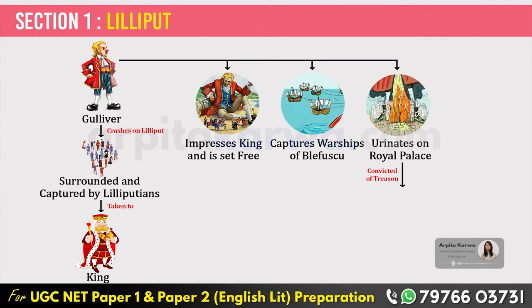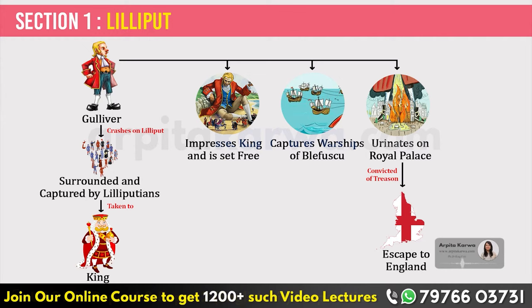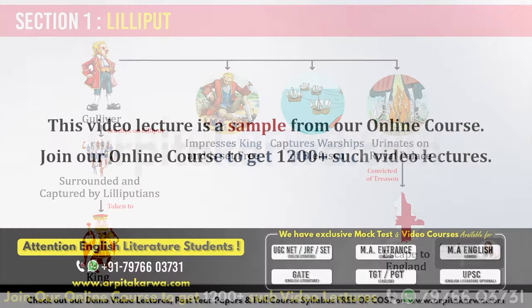Gulliver is accused of treason and sentenced to be shot in the eyes and then starved to death. Fearing for his life, Gulliver escapes to Blefuscu and finds a boat there that helps him leave for England. That was his exciting journey to the land of Lilliput.